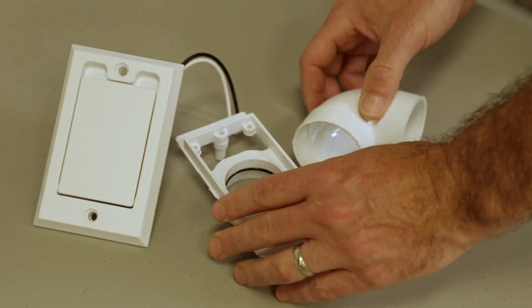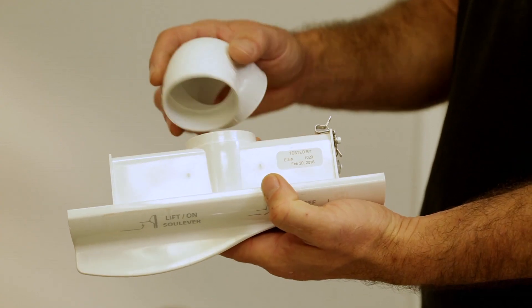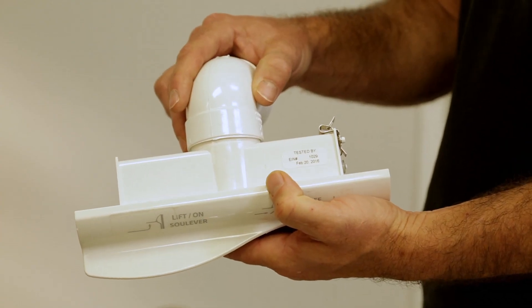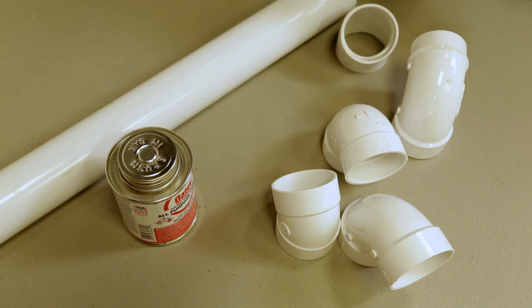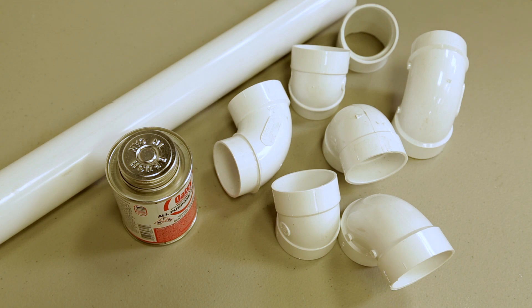Tight 90-degree fittings are only to be used on connections to hose inlets or automatic dustpan inlets. Full-size sweep 90, 45, or 30-degree fittings should be used throughout the rest of the piping system to minimize the risk of clogs.